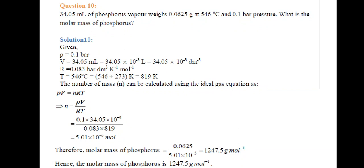Number of moles from PV equals nRT, n equals 5.01 times 10^-5 moles. Therefore, molar mass of phosphorus is given mass upon number of moles which is 0.0625 upon 5.01 times 10^-5 which equals 1247.5 gram per mole.